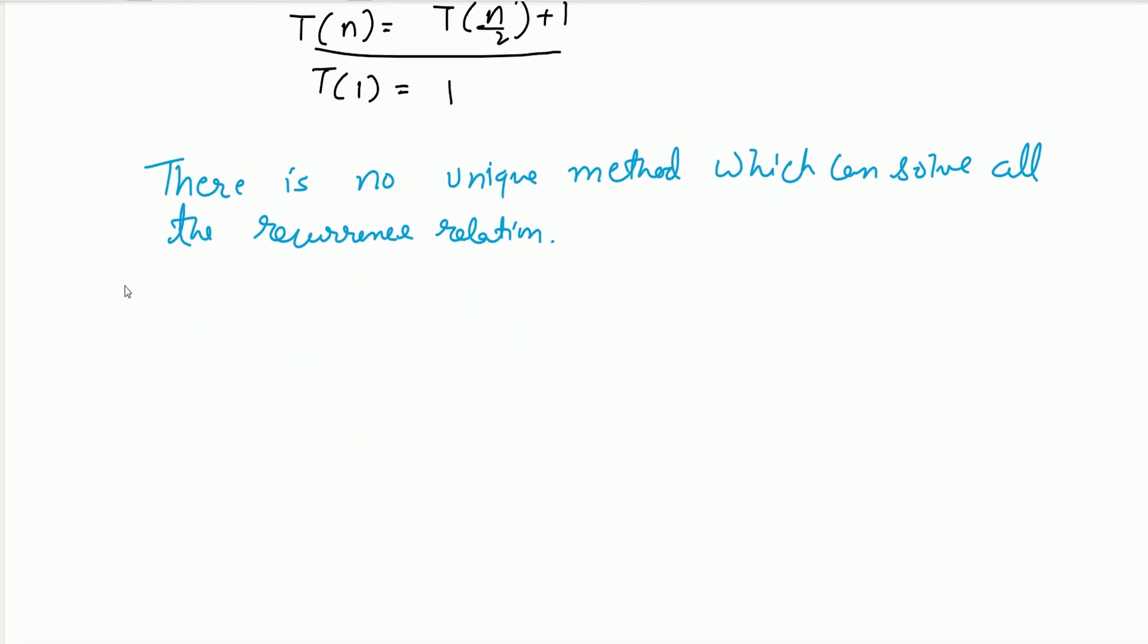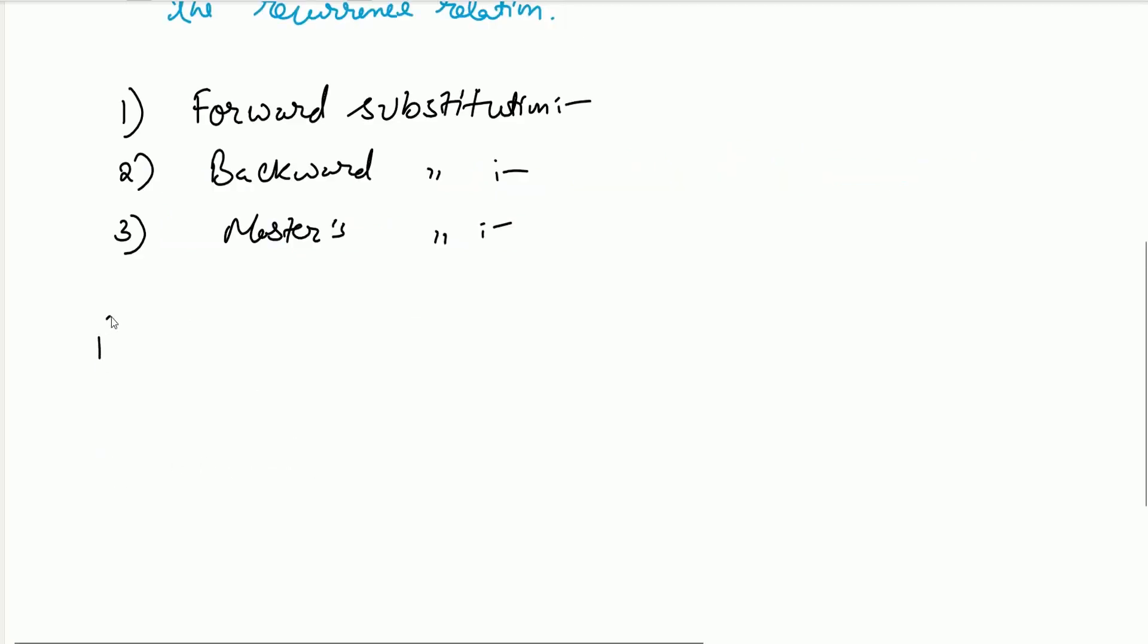There are basically three methods we are going to study. Number one is forward substitution, number two is backward substitution, and number three is master's method.